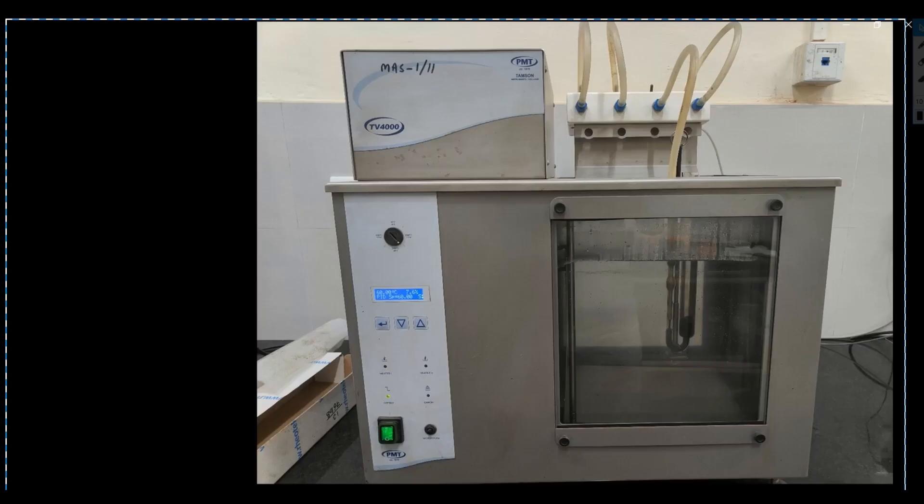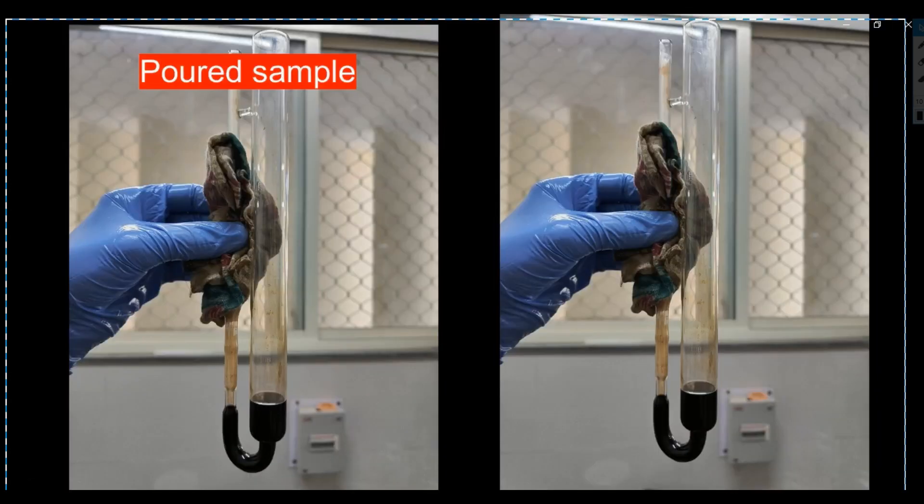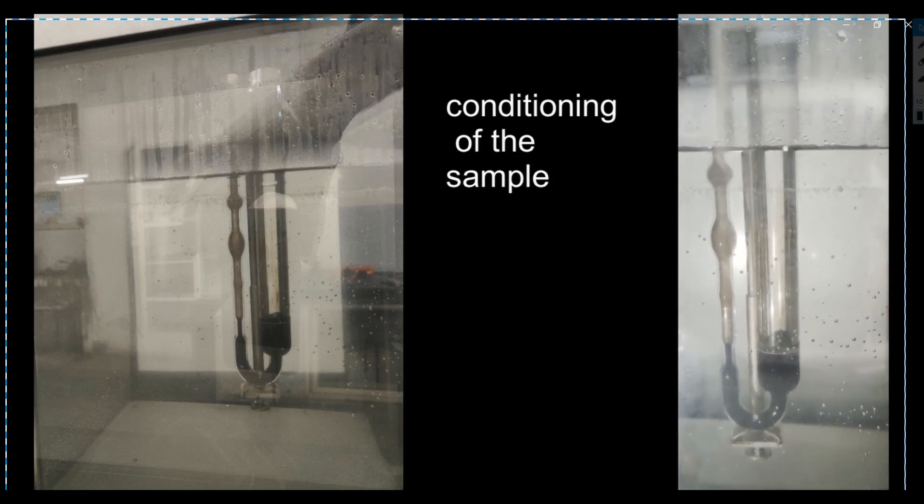After that the filled viscometer tube is kept in the water bath for a prescribed period of time to obtain the equilibrium temperature of 60 degree centigrade and that is called the conditioning of the sample.